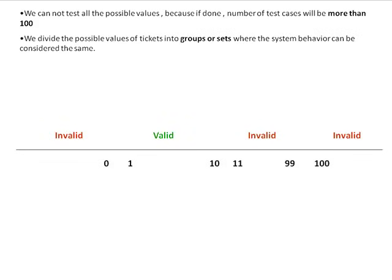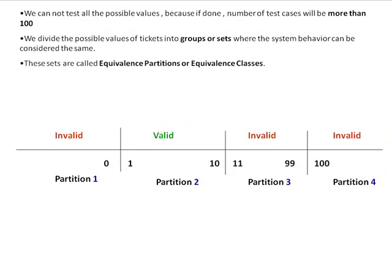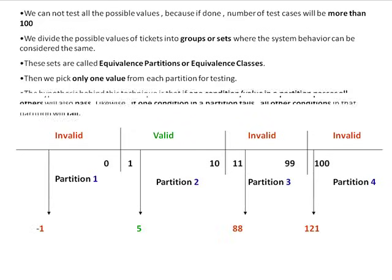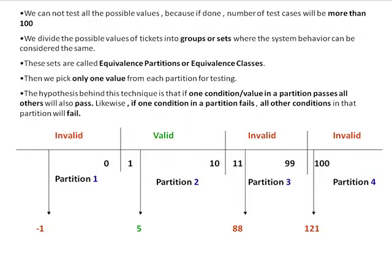We divide the possible values of tickets into groups or sets where the system behavior can be considered the same. These sets are called equivalence partitions or equivalence classes. Then we pick only one value from each partition for testing. The hypothesis behind this technique is that if one condition or value in a partition passes, all others will also pass. Likewise, if one condition in a partition fails, all other conditions in that partition will fail.